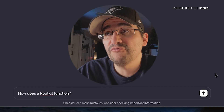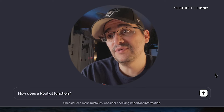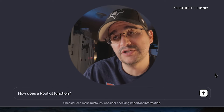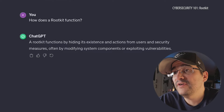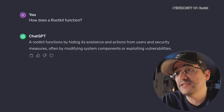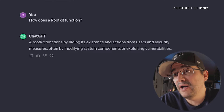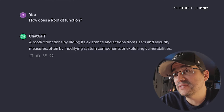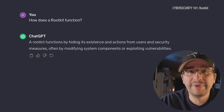Rootkit doesn't sound as terrible as some of the other things I've heard. So since we know it's malicious software, let's find out how it functions. A rootkit functions by hiding its existence and actions from users and security measures, often by modifying system components and exploiting vulnerabilities.